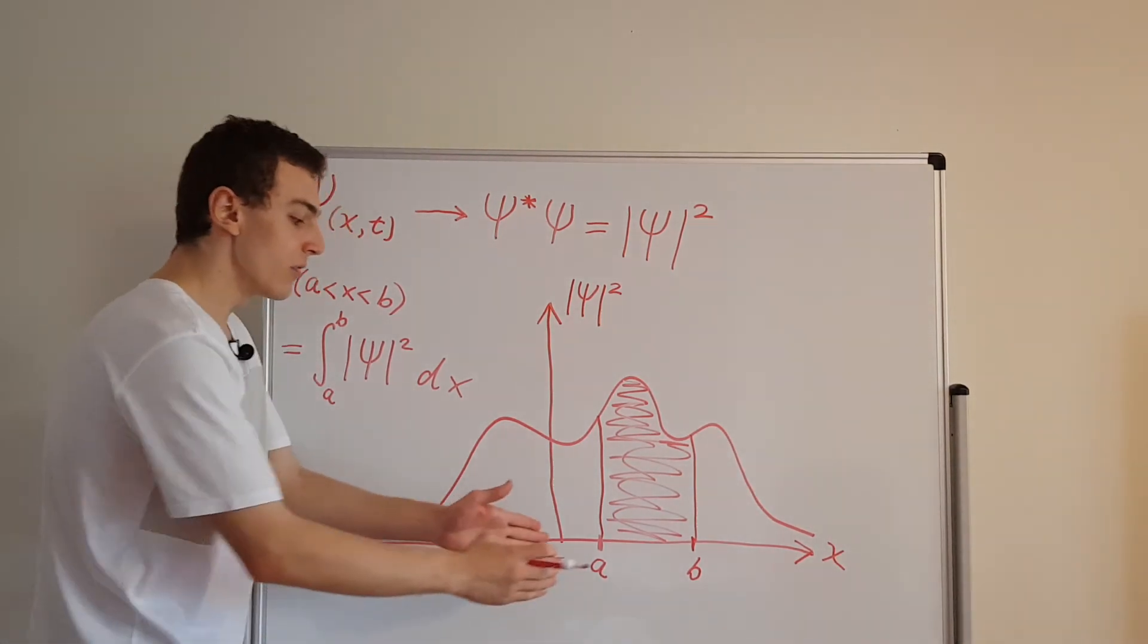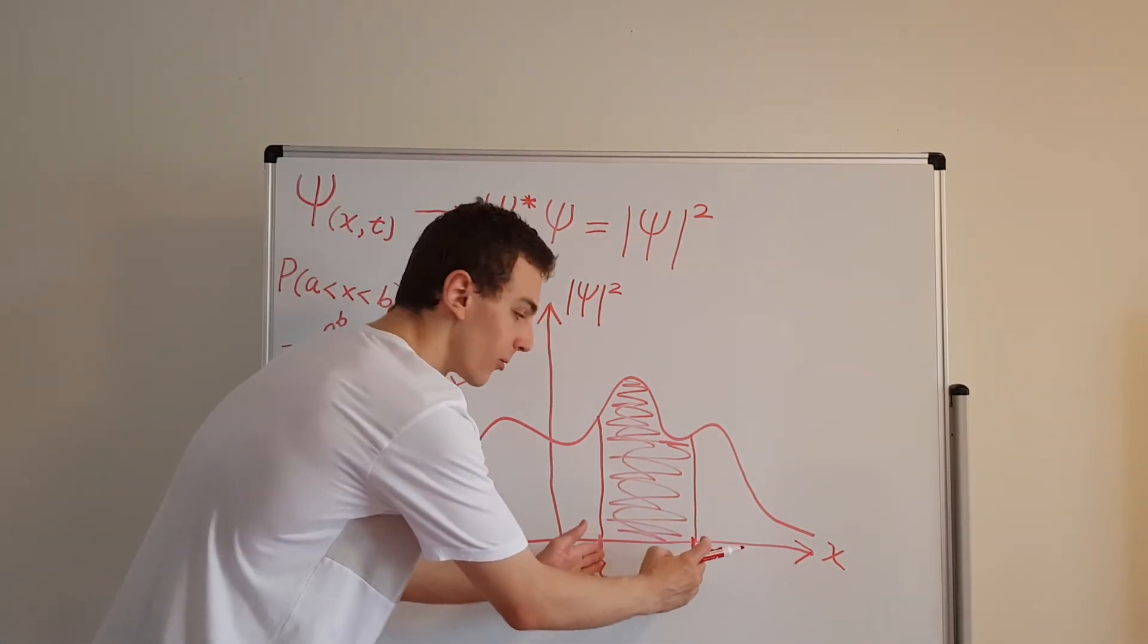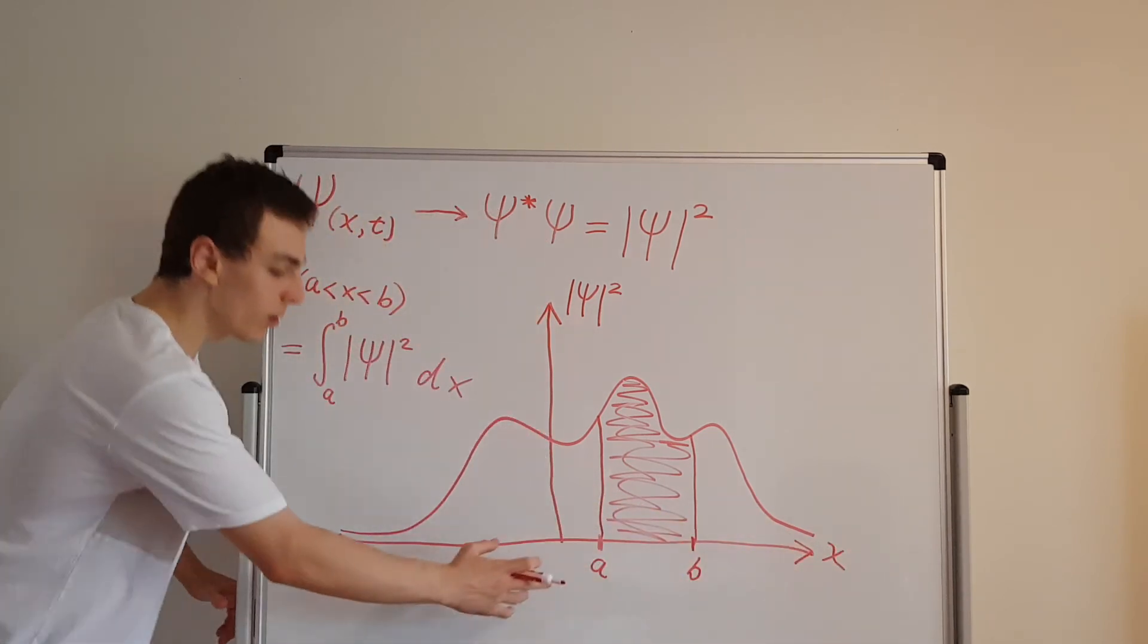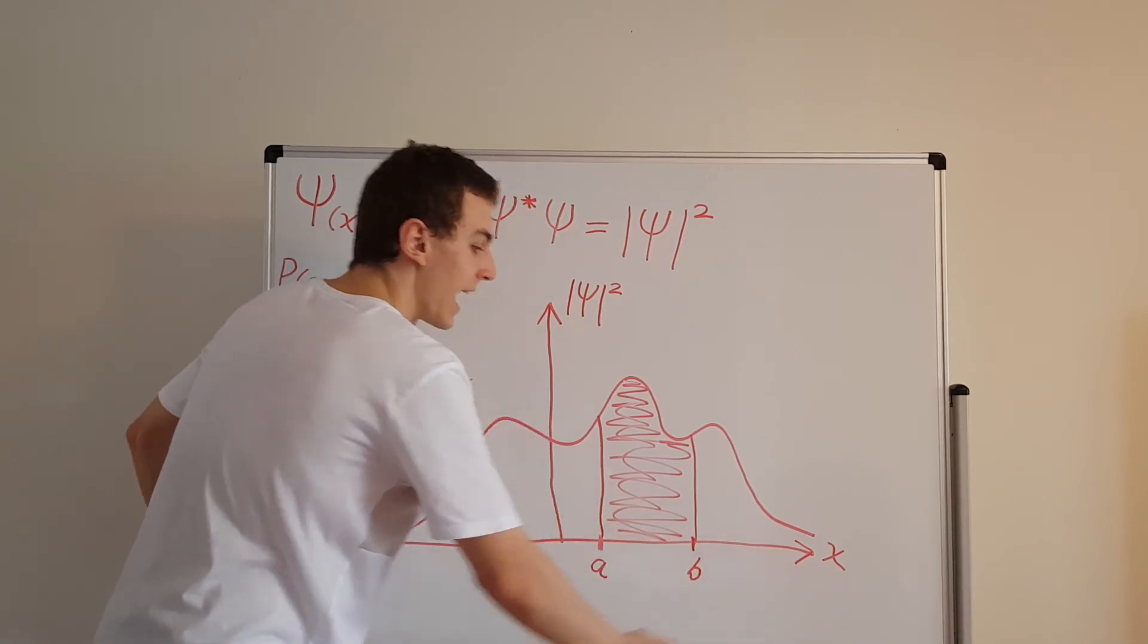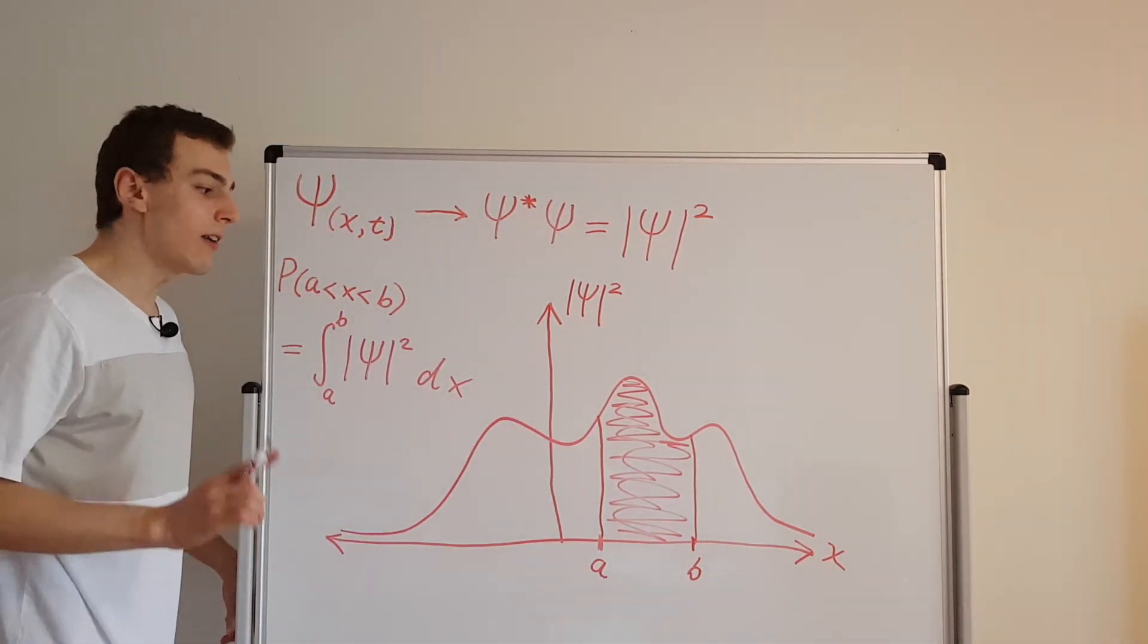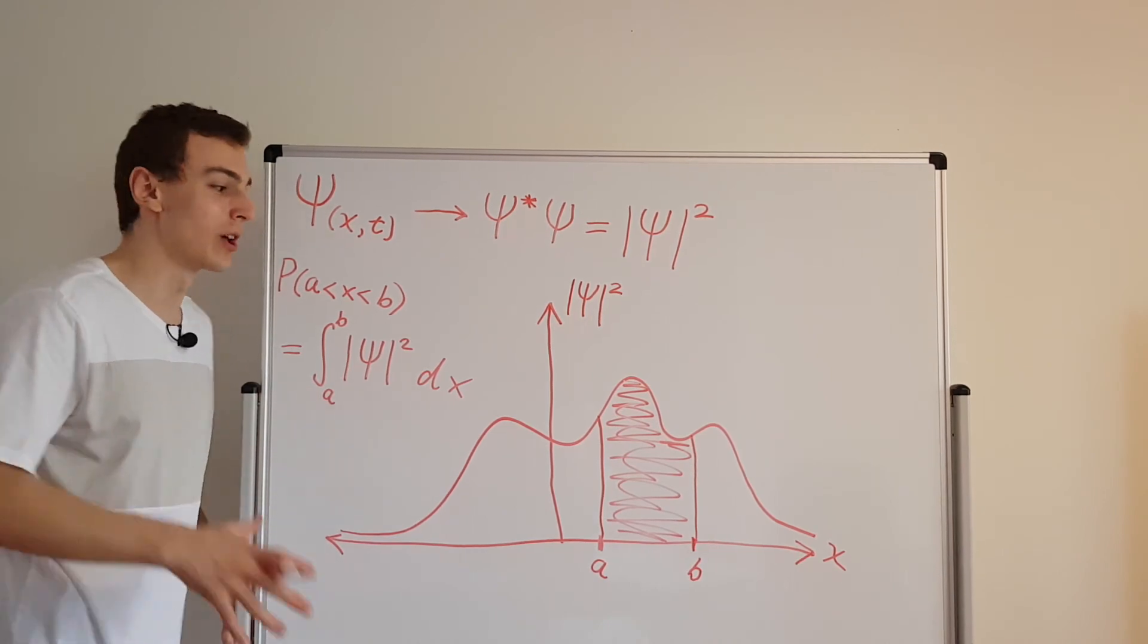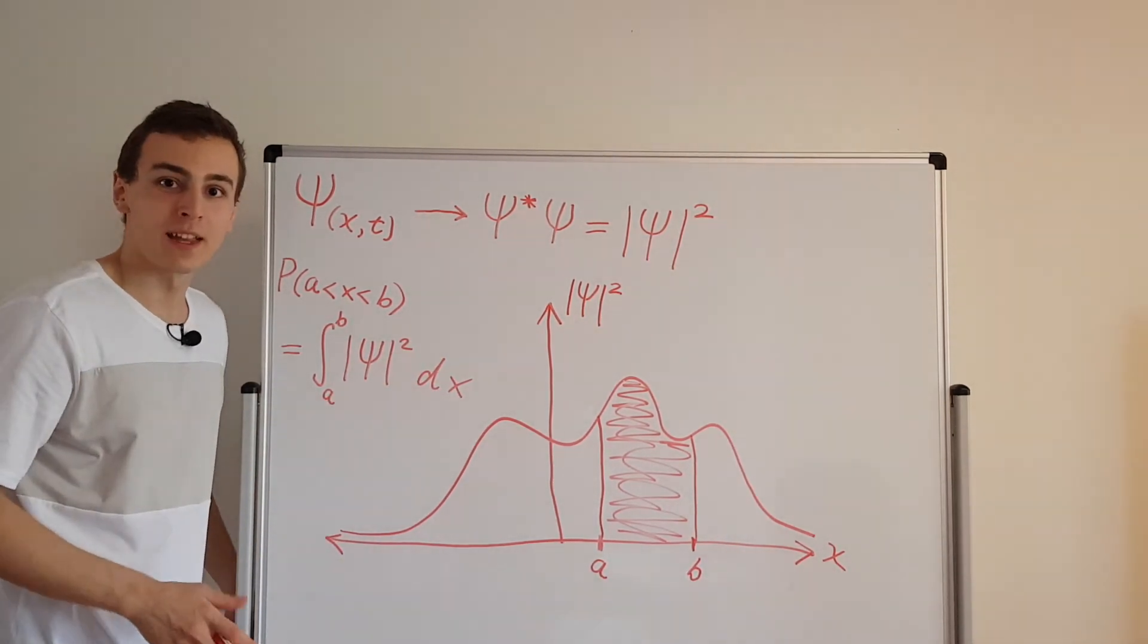So if you think about this, if we expand a and b, this interval, if we expand it out to take over the entire number line, we're going to be going from minus infinity to infinity. And I want you to think about what that value needs to be in order for this to be a physically realizable description.